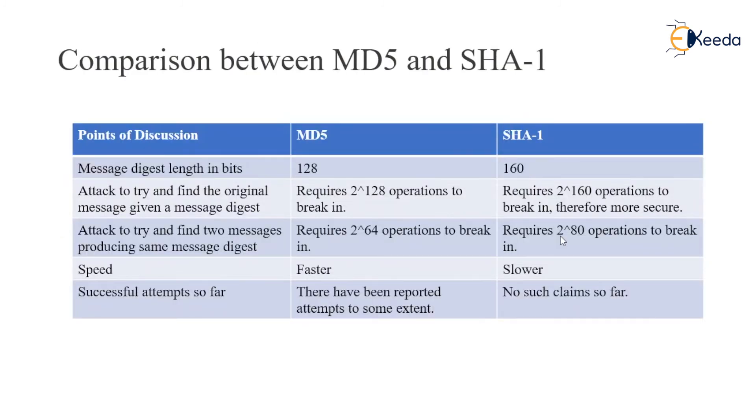This is the comparison between MD5 and SHA, wherein it states that the usage of SHA is much better than MD5. Message digest length in bits: MD5 works for 128 and SHA works for 160. Attack to find original message given a message digest requires 2^128 operations for MD5 and 2^160 operations for SHA.